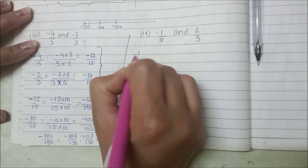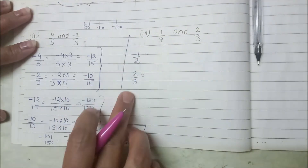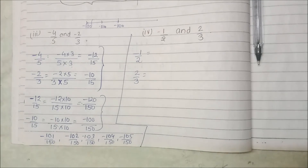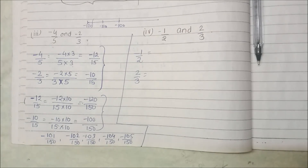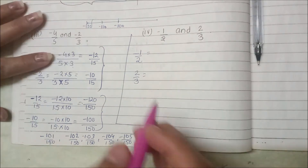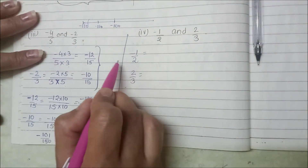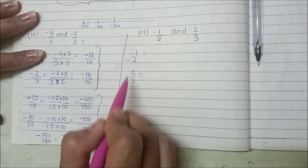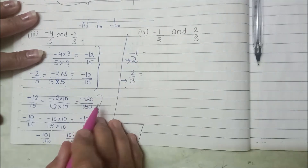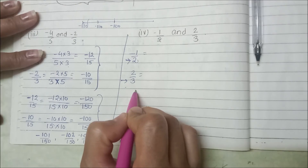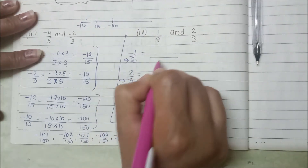Next, what do we see? This is minus 1 upon 2 and 2 upon 3. Here, what do we do? First, the denominators we have to make the same. We have to find the LCM. LCM of 2 and 3 is 6, so we multiply the first fraction by 3 and the second by 2.